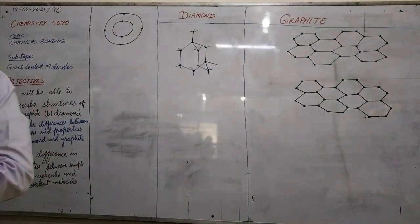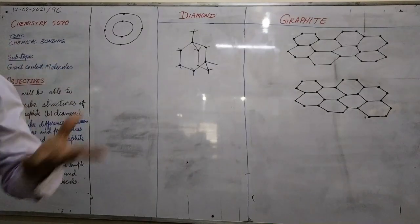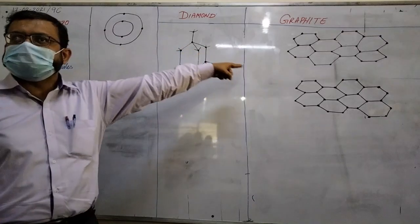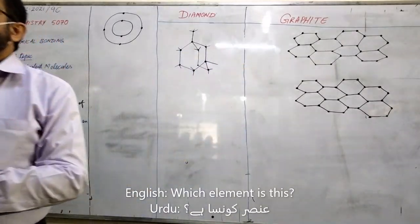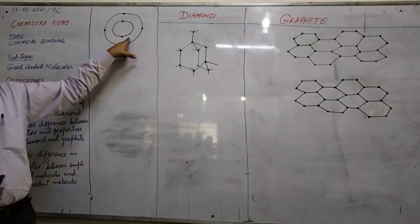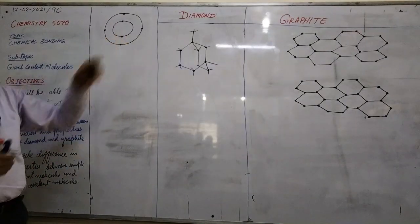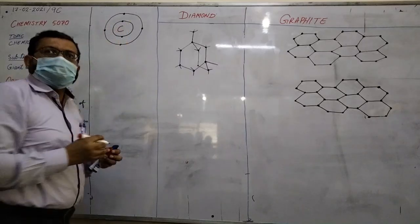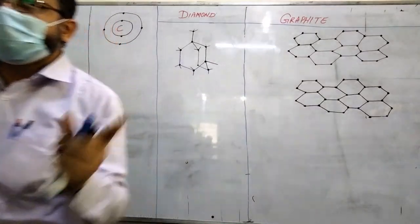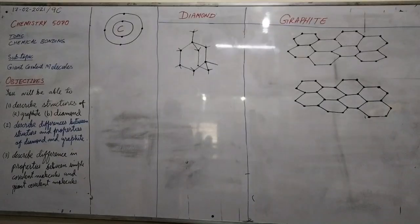Diamond is a precious form of which element? Carbon. Graphite is also carbon. So this is the atomic electronic structure of carbon. To which group of the periodic table does carbon belong? Group 4 of the periodic table.